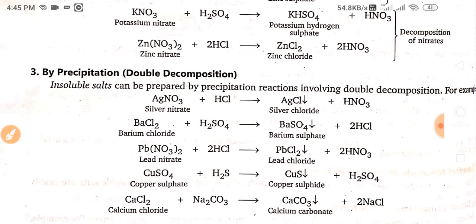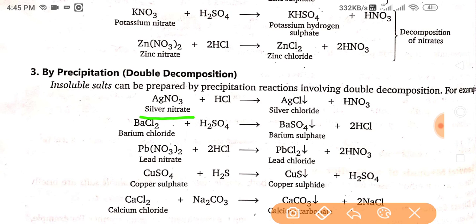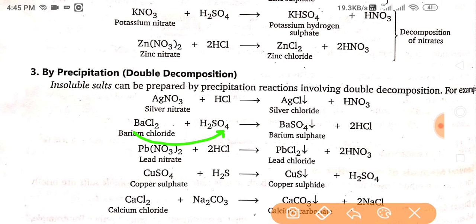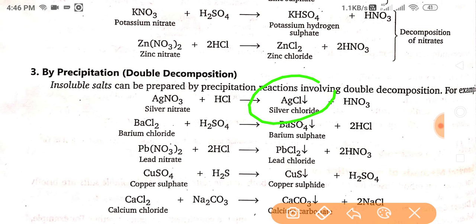The third method is by precipitation. Insoluble salts can be prepared by precipitation reactions involving double decomposition. For example, AgNO₃ + HCl — double decomposition occurs and forms HNO₃ and AgCl. Also, BaCl₂ + Na₂SO₄ forms BaSO₄ and 2NaCl. These double decomposition reactions form a precipitate such as silver chloride, barium sulfate, lead chloride, and copper sulfate.